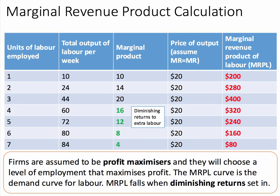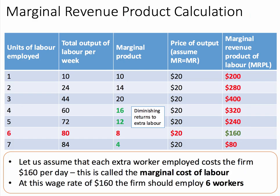The marginal revenue product of labour is highlighted here, and firms in this market are assumed to be profit maximisers. They'll choose a level of employment that maximises profits, so they have to think about two things: the marginal revenue product of labour, and the marginal cost of employing labour. We're going to assume that each worker employed costs the firm $160 per day — that's the marginal cost of labour.